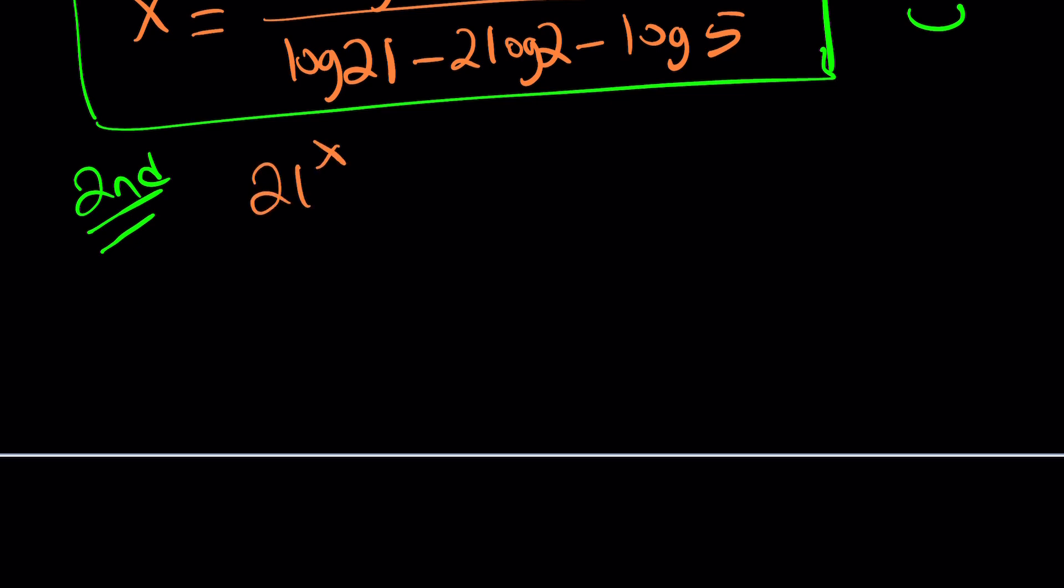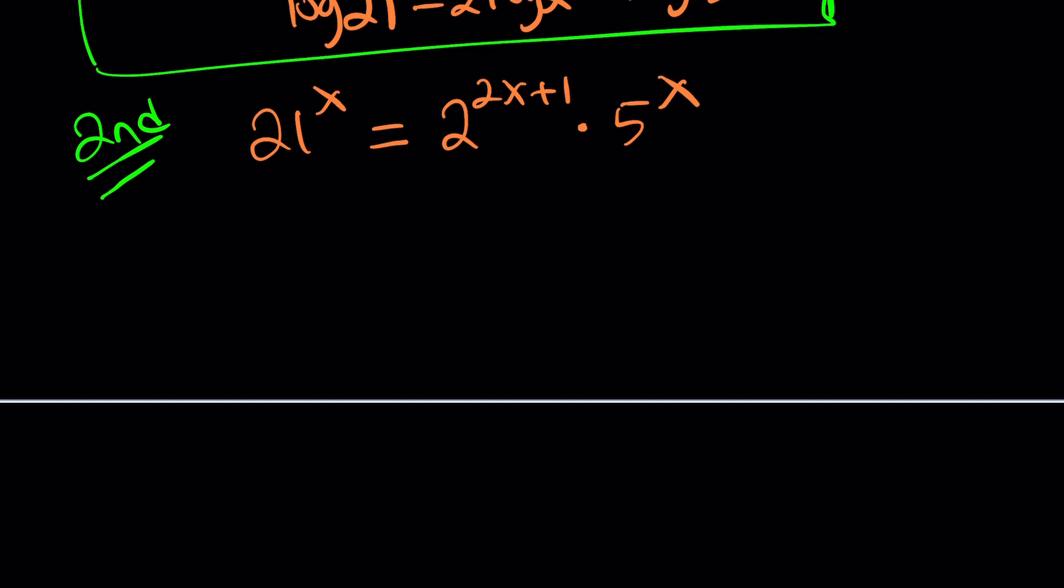Let's go ahead and take a look at the second method now. Let me rewrite the original problem. 21 to the power X equals 2 to the power 2X plus 1 times 5 to the power X. Again, this problem is from Higher Algebra by Hall and Knight. It's a beautiful problem. It's not too hard, not too easy. The next thing we're going to do is, since we already use logs, we shouldn't be using them anymore. Something different. So when you think about a problem like this, I don't have a script. I haven't practiced it, and I think it's more natural. You get to see the thought process. I haven't really thought about this problem before.